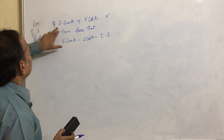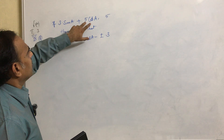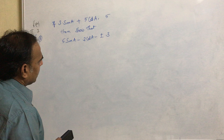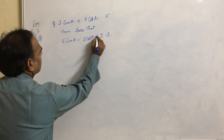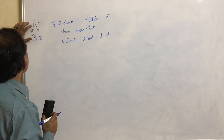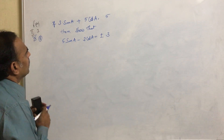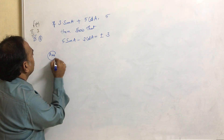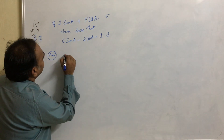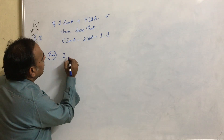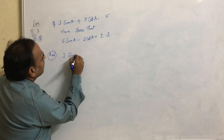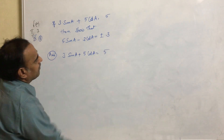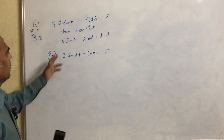Our next problem is: if 3sinA plus 5cosA equals 5, then show that 5sinA minus 3cosA equals plus or minus 3. We need to write what is the given. The given is 3sinA plus 5cosA equals 5.